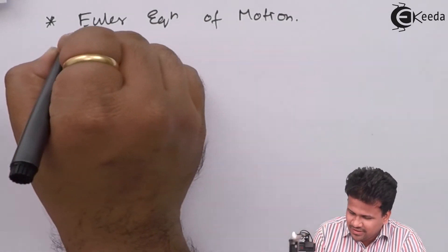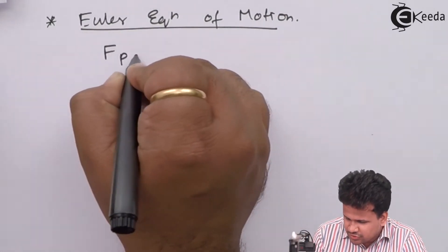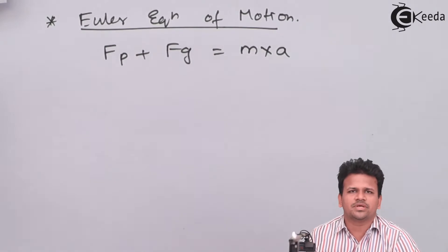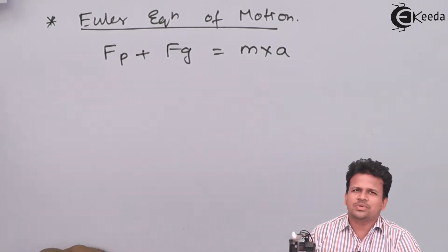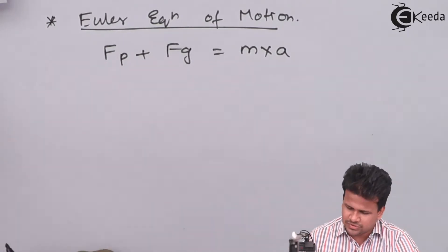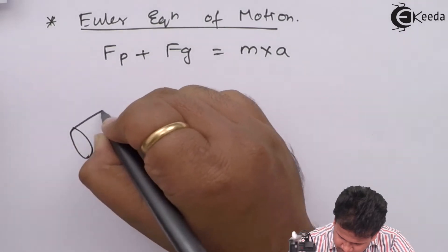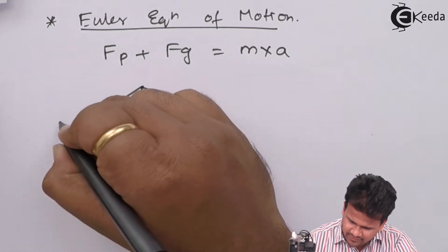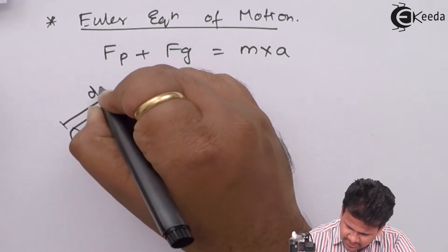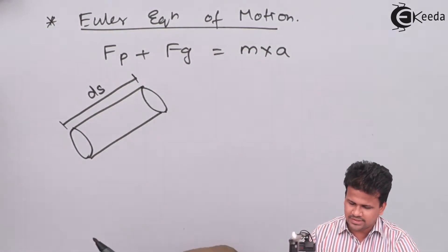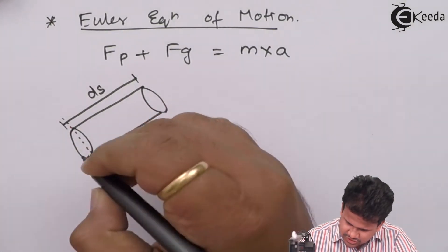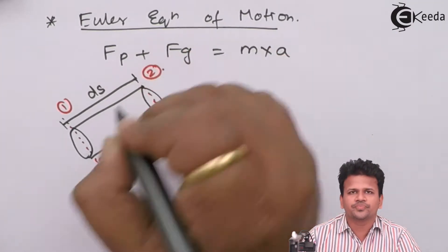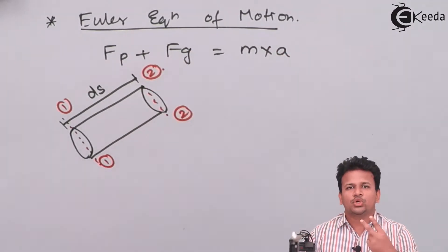In Euler's equation, we have studied that it is the sum of force due to pressure plus force due to gravity, equal to mass into acceleration in that particular direction. Let us assume a control volume at some angle theta. Let us consider this as a control volume having a length ds. Let us consider this section as section 1 and this section over here as section 2.